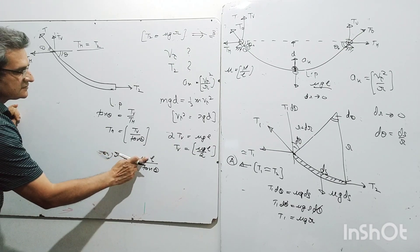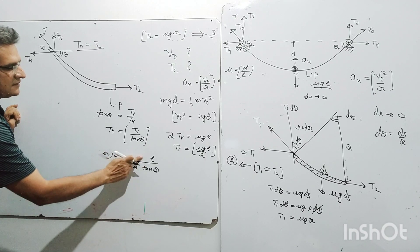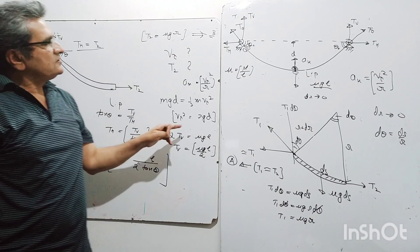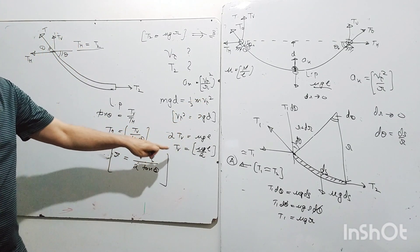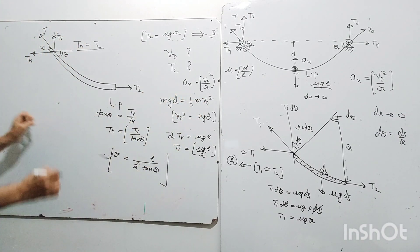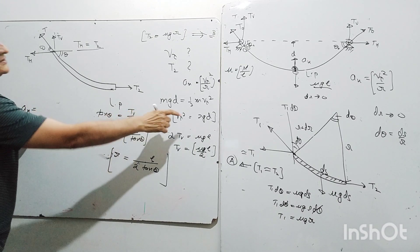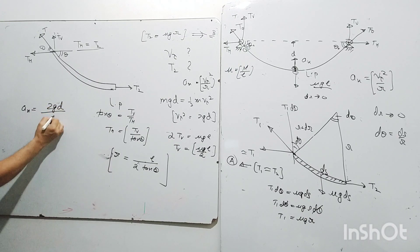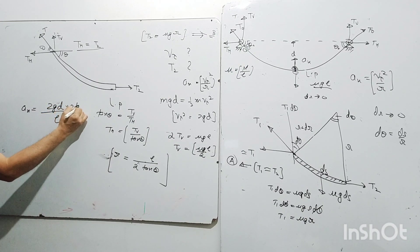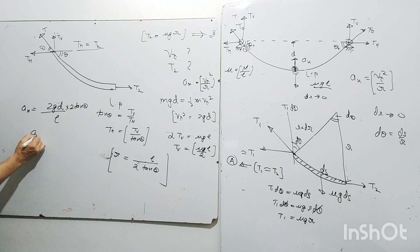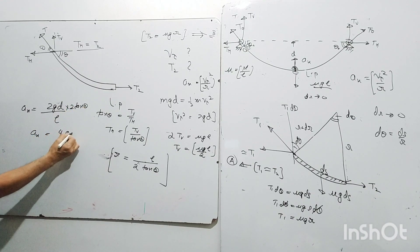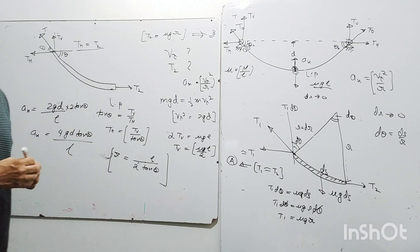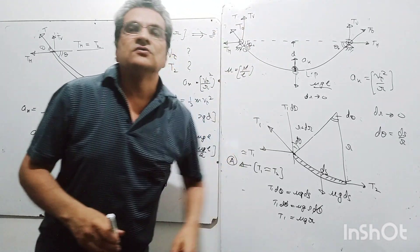Now, T2 = mu·g·r from equation (b), so mu·g·r = mu·g·L / (2·tan(theta)). The mu·g terms cancel, giving r = L / (2·tan(theta)) — which is a very important relationship. Substituting into the normal acceleration: a_n = vt² / r = 2g·d / (L / (2·tan(theta))) = 4g·d·tan(theta) / L. This is the value of the normal acceleration of the bead when it is at the lowest point.